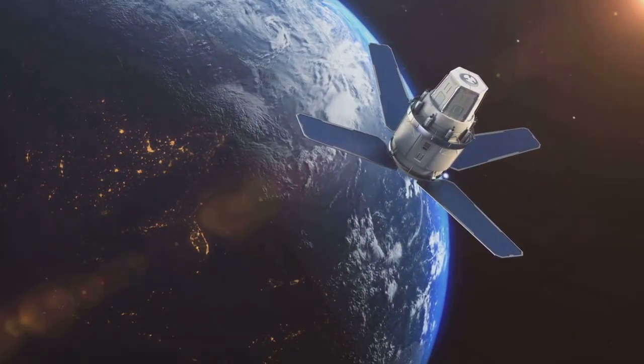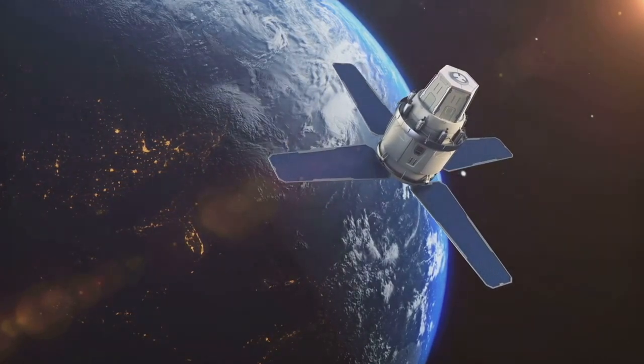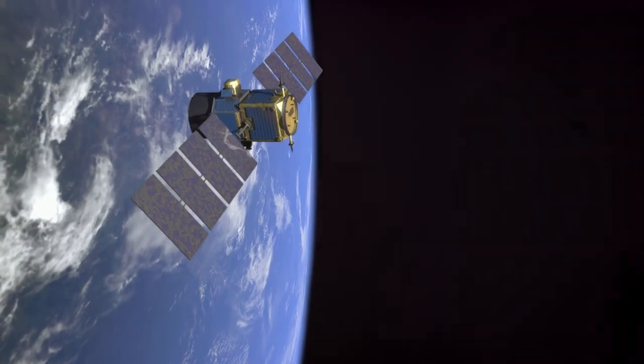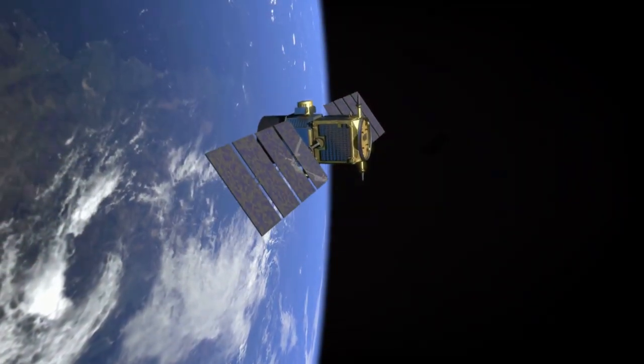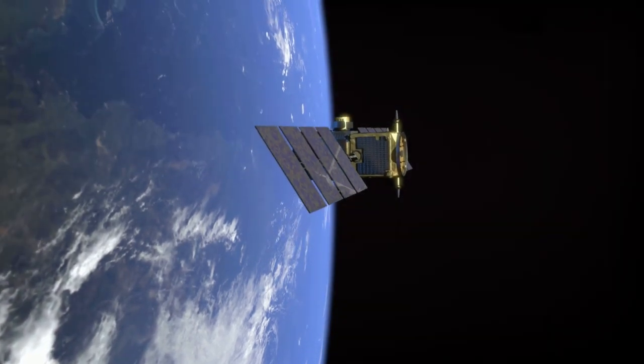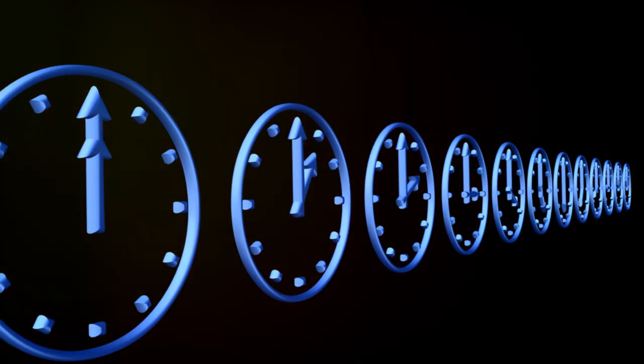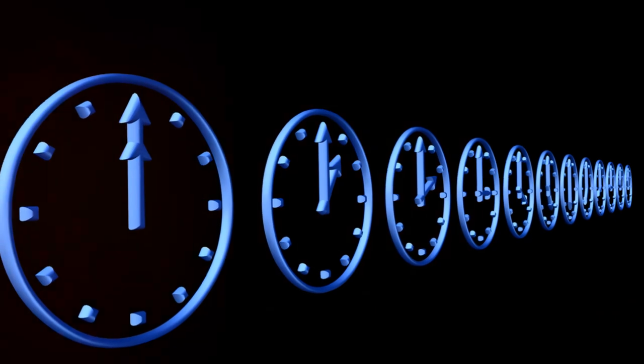Fast forward a few decades, and we're using general relativity in our everyday lives. Believe it or not, the global positioning system, or GPS, relies heavily on this theory. The satellites transmitting signals to your GPS are moving at high speeds and are far from the gravitational pull of Earth, factors that affect the ticking of their onboard clocks. General relativity helps correct these time discrepancies, ensuring your GPS can pinpoint your location with impressive accuracy.